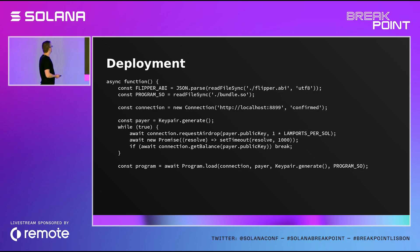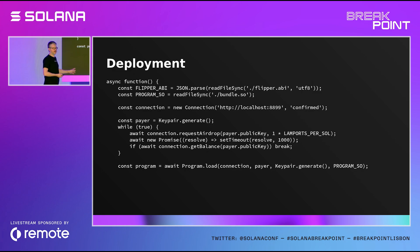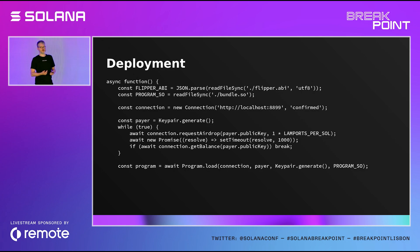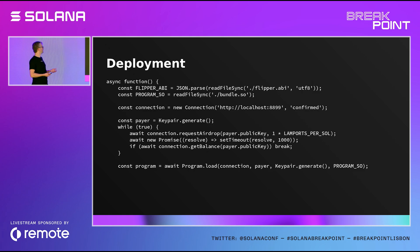Here is some JavaScript to make it work. You connect, read the ABI file, read the SO file. This is just some stuff to do an airdrop for your local test program. You load the program once — unlike Ethereum, where each contract has an entire copy of the entire code, on Solana we only have one contract which contains the code and that can be reused many times. So if you want to deploy the same contract twice, you don't have to pay for it twice — you only pay once for the upload.